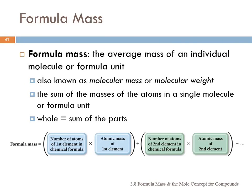We come to this section in the chapter on formula mass. The formula mass is the average mass of an individual molecule or formula unit. We've already seen atomic mass and molar mass of an element. The molar mass is the mass of one mole, the atomic mass is the mass of one atom, and the formula mass is the mass of the formula — however it's written. It's sometimes called molecular mass or molecular weight. You take the sum of the masses of each atom in a single molecule or formula unit and add them all up.